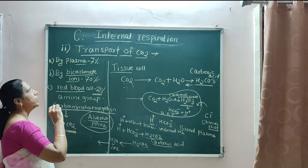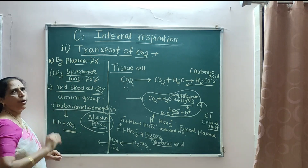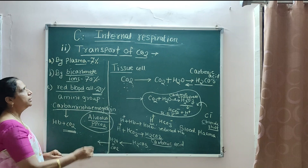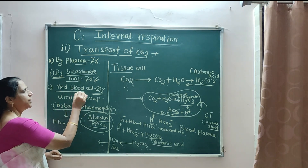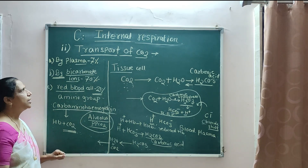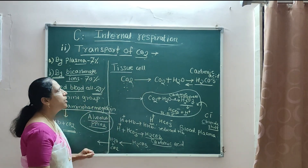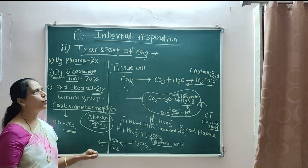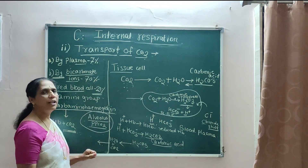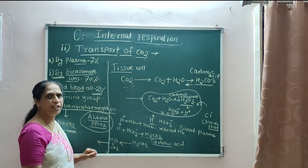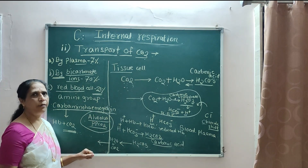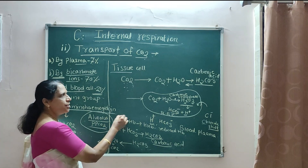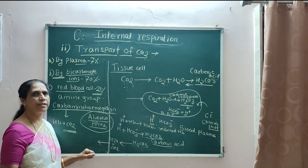The transport of CO2 is completed in three parts: 7% by plasma, 70% by bicarbonate ions, and 23% by red blood cells. Transport of O2 and transport of CO2 are the two important steps in internal respiration. In the next part, we will discuss the oxygen dissociation curve, Haldane effect, and Bohr effect, as CO2 concentration or pCO2 is more in the tissue cells.